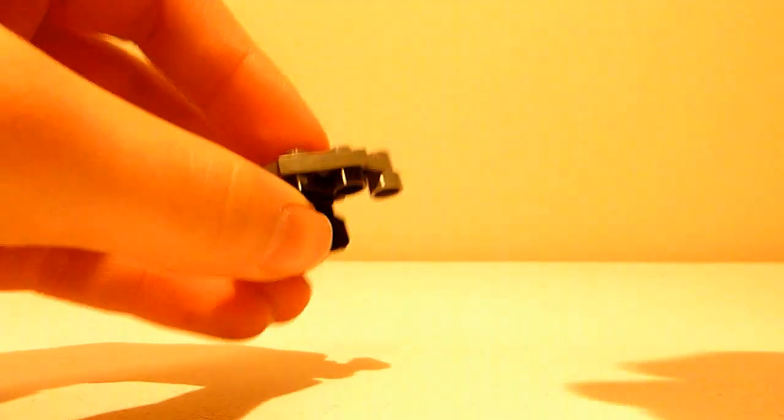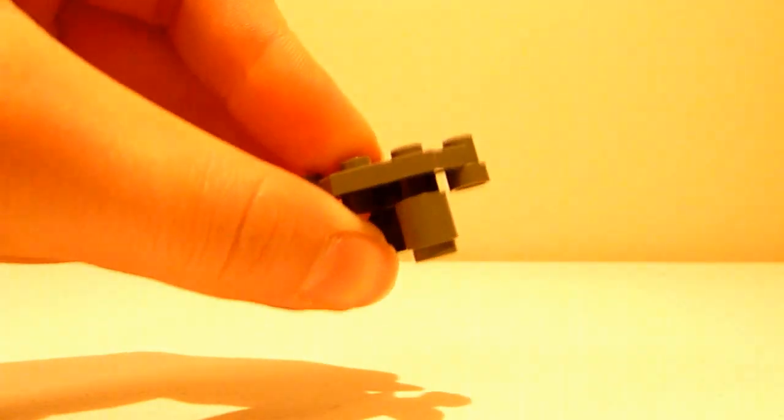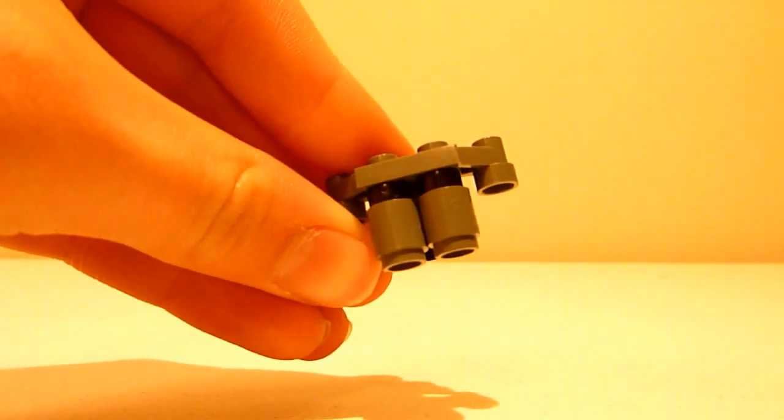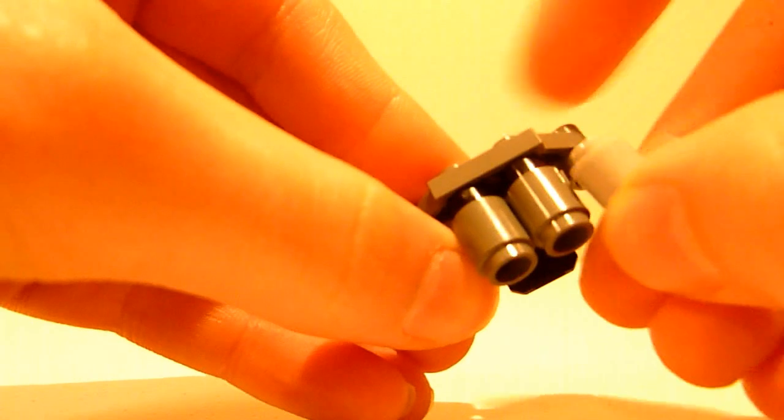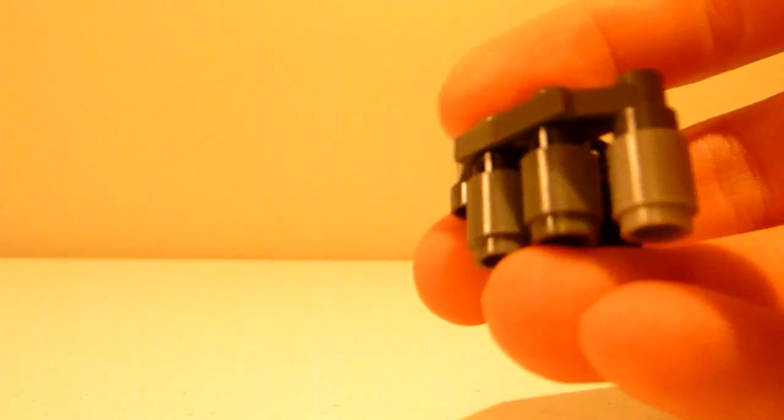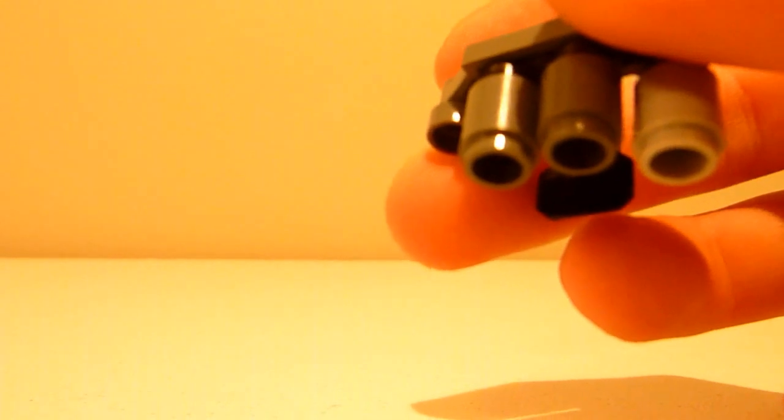Now, get two dark gray cylinders, and place them there. Then get two light gray cylinders, and place them there, and put one over here.